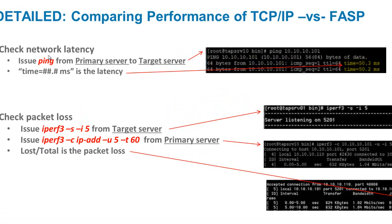First, check the network latency. On the primary Spectrum Protect server, issue a ping to the target Spectrum Protect server. In the results you'll see the time — in this case, 50.3 milliseconds. That is your latency.